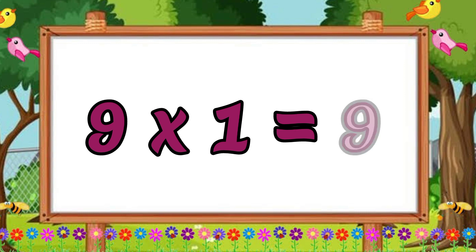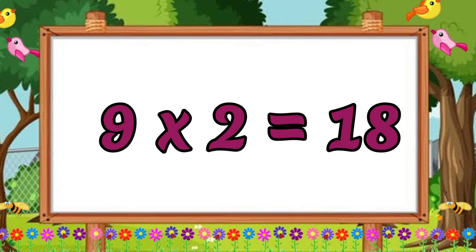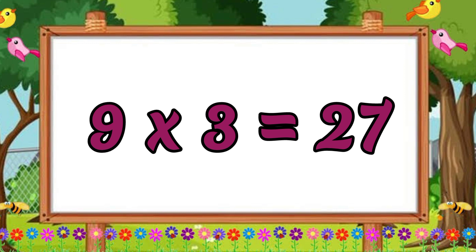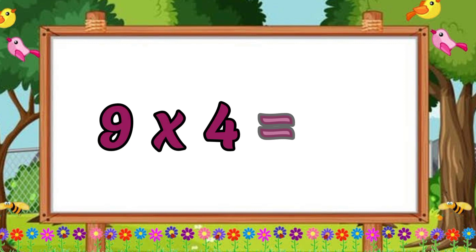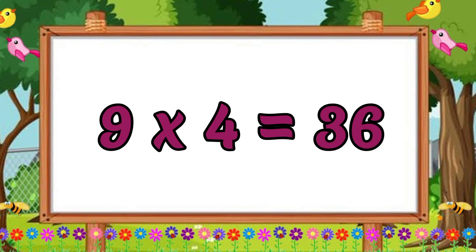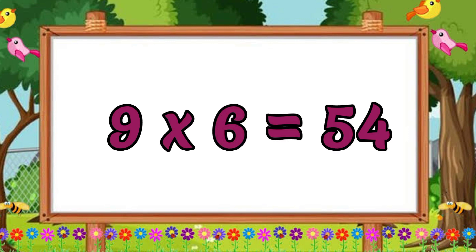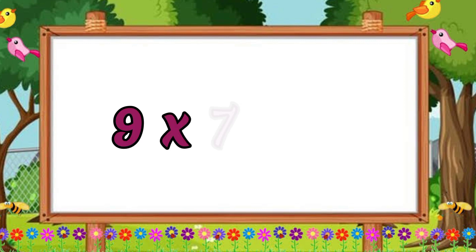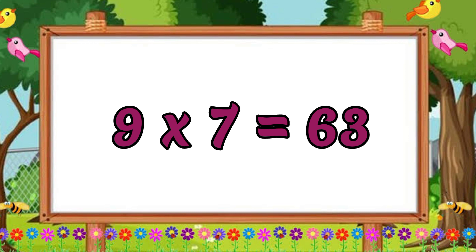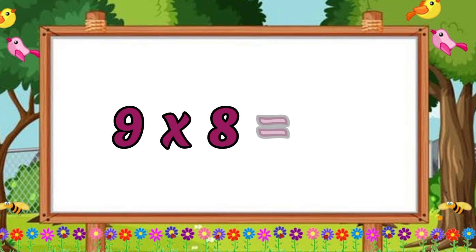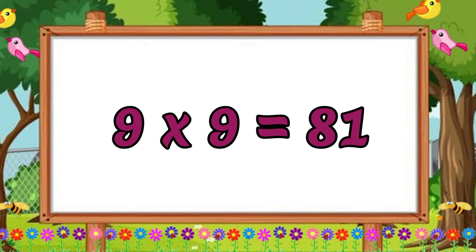Nine ones are nine. Nine twos are eighteen. Nine twos are eighteen. Nine threes are twenty-seven. Nine threes are twenty-seven. Nine fours are thirty-six. Nine fours are thirty-six. Nine fives are forty-five. Nine fives are forty-five. Nine sixes are fifty-four. Nine sixes are fifty-four. Nine sevens are sixty-three. Nine sevens are sixty-three. Nine eights are seventy-two. Nine eights are seventy-two. Nine nines are eighty-one. Nine nines are eighty-one. Nine tens are ninety. Nine tens are ninety.